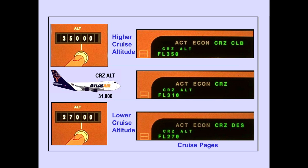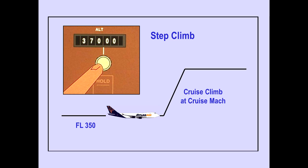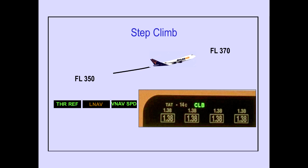Selecting a higher or lower cruise altitude and pushing the altitude selector automatically displays the new cruise altitude on the FMS-CDU. A step climb is made by selecting the new cruise altitude and pushing the altitude selector. The airplane begins a cruise climb at the cruise mode. During a step climb, thrust reference and VNAV speed are displayed on the PFD. The autothrottle maintains the thrust reference, the autopilot pitch maintains the speed, and climb thrust reference is displayed on EICAS.